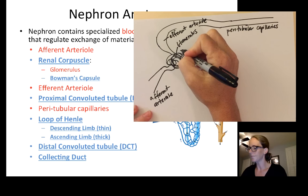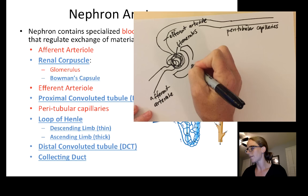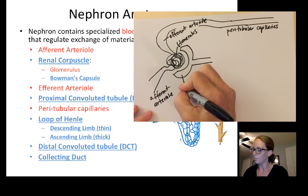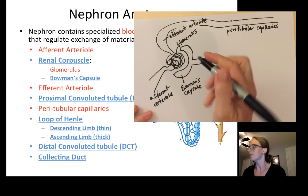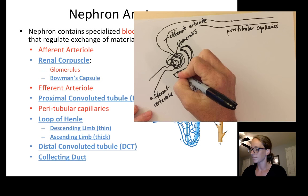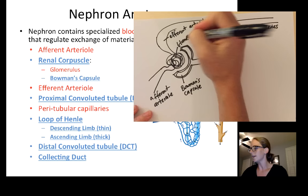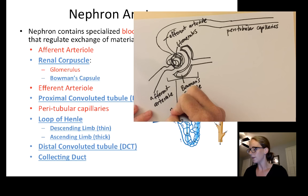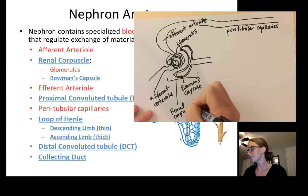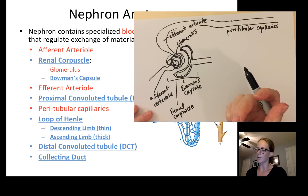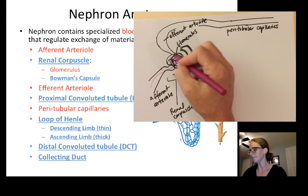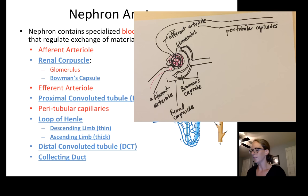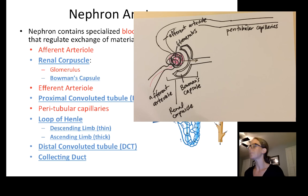The blood exiting the glomerulus will leave out the efferent arteriole, and that will continue to branch around the kidneys in a group of capillaries called the peritubular capillaries. Surrounding the glomerulus is a large capsule, which is the start of the nephron. That capsule is called Bowman's capsule. It's lined with epithelial cells and has a hollow center. Together, Bowman's capsule plus the glomerulus is called the renal corpuscle.